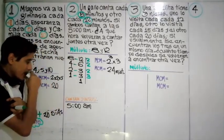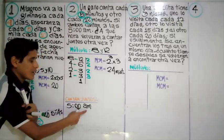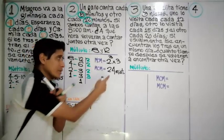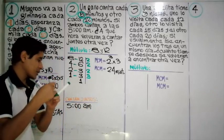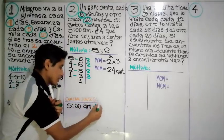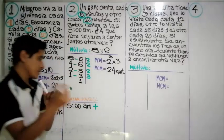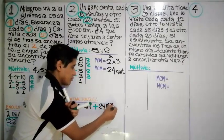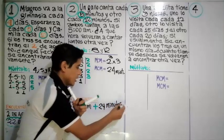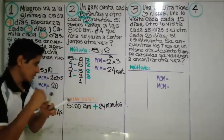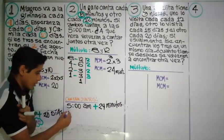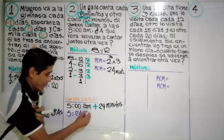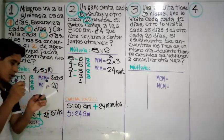Cantaron juntos a las cinco de la mañana. Más veinticuatro minutos, simplemente sumamos. Cinco más veinticuatro minutos: las cinco y veinticuatro de la mañana. Esa es la respuesta.